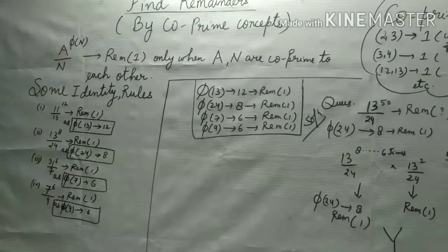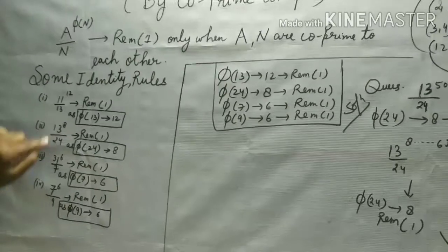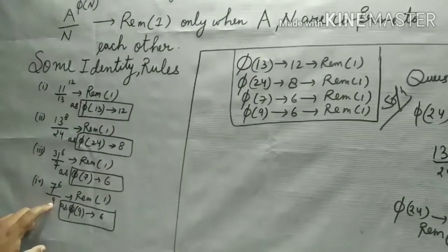We need to remind ourselves that the identities and rules are given. So 13, 12, 8, 24, 7, 6, 9, 7.